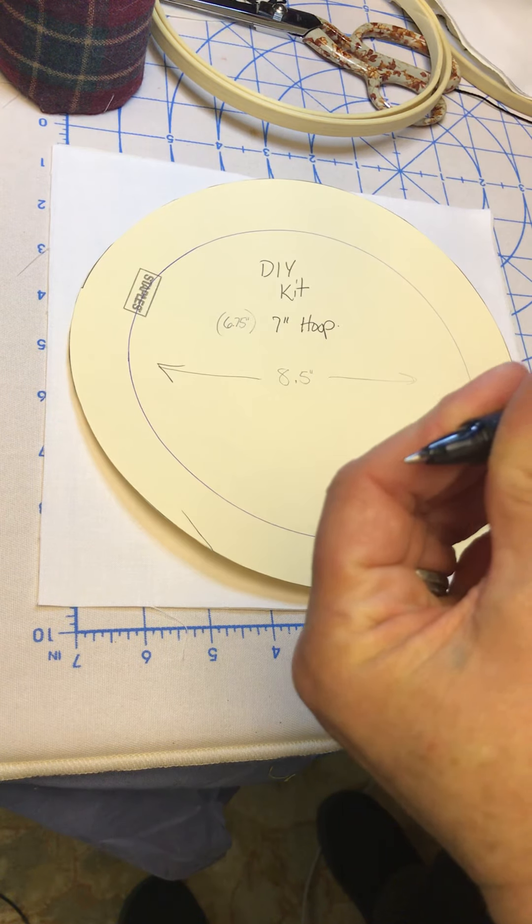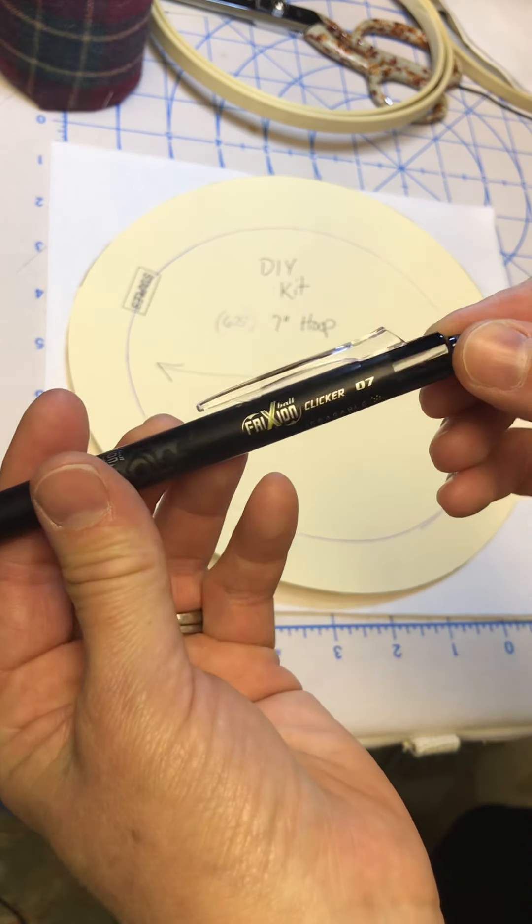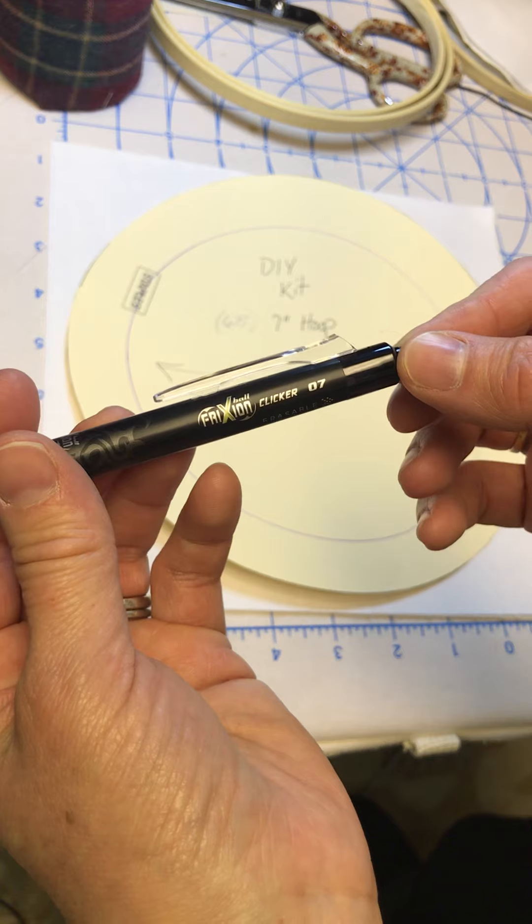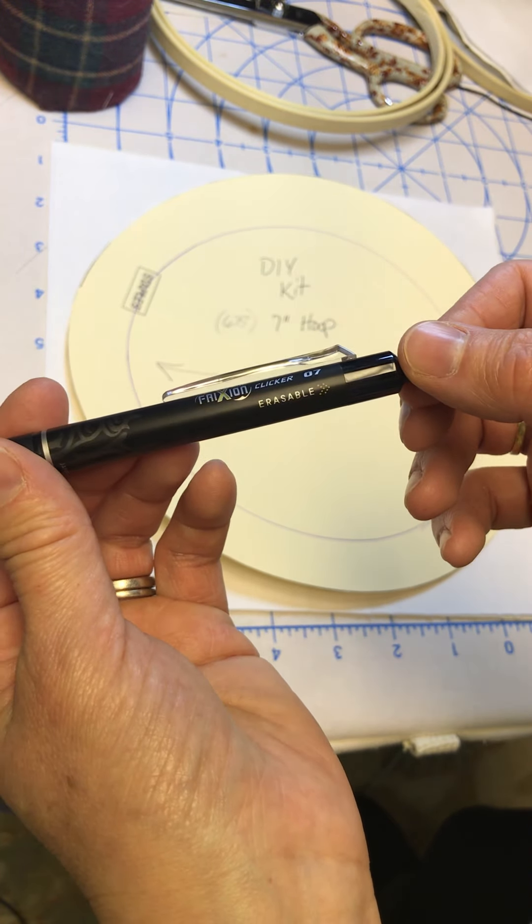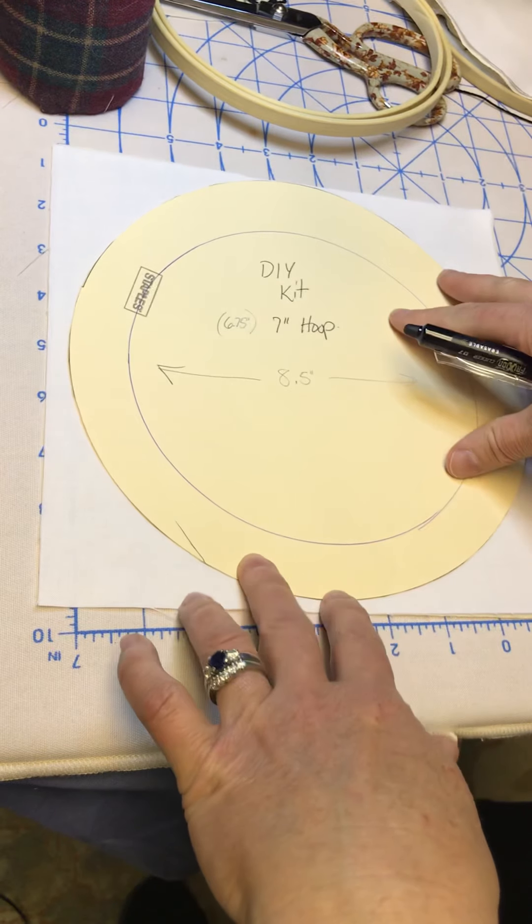So I'm going to trace this on. We're going to cut on the line. You're not going to see it anyway. But I have these friction pens and they are erasable. So if you use an iron or hairdryer, the marks will disappear.